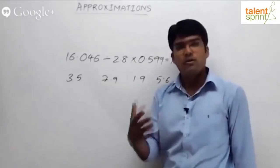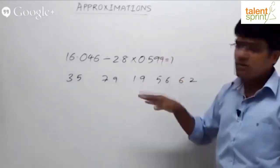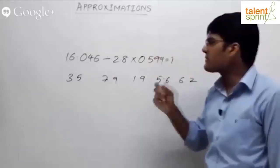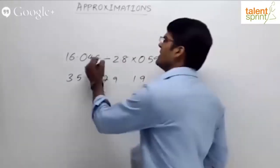Remember what BODMAS says: when there are only multiplications and divisions, you can simply proceed from left to right or do divisions first, then go for multiplications. So let's look at this: 16.046 is approximately 16.